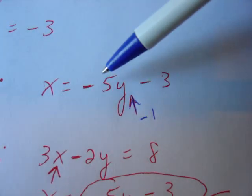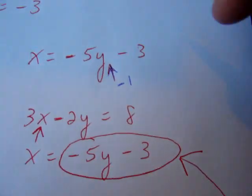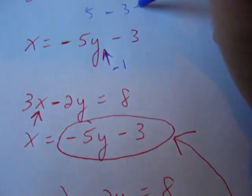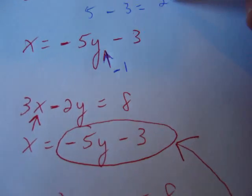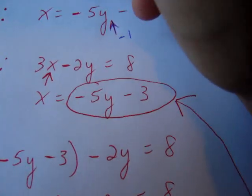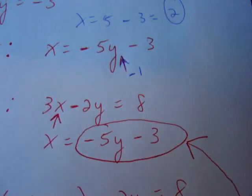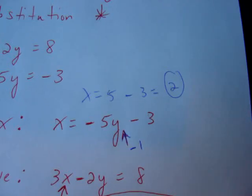Negative 5 times negative 1 is positive 5. Take away the 3. Positive 5, take away 3 is 2. So now x equals 2.